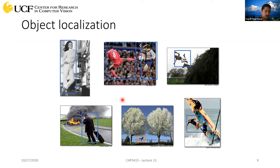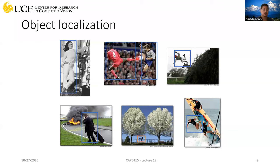Most of the time what we do is we only draw bounding boxes. But a perfect solution would detect each pixel in the image — whether it belongs to a particular class or not. Instead of a bounding box, you would draw a fine boundary around the person, and that's called object segmentation. In segmentation, every pixel must indicate which category or class it belongs to.